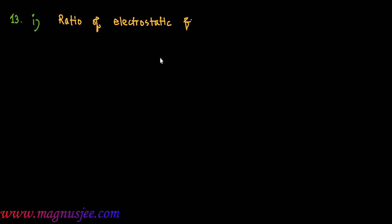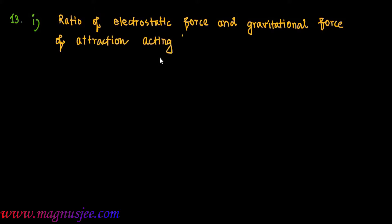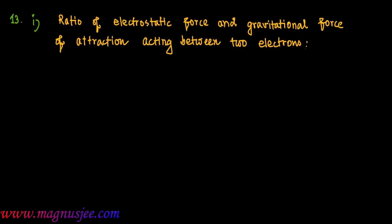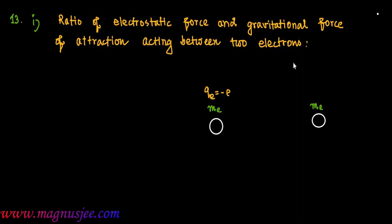We will find the ratio of electrostatic force and gravitational force of attraction acting between two electrons. In the diagram we can draw two electrons having mass Me and Me. The charges of the two electrons are Q_E equal to minus e, and R is the distance between the two electrons situated at points A and B.